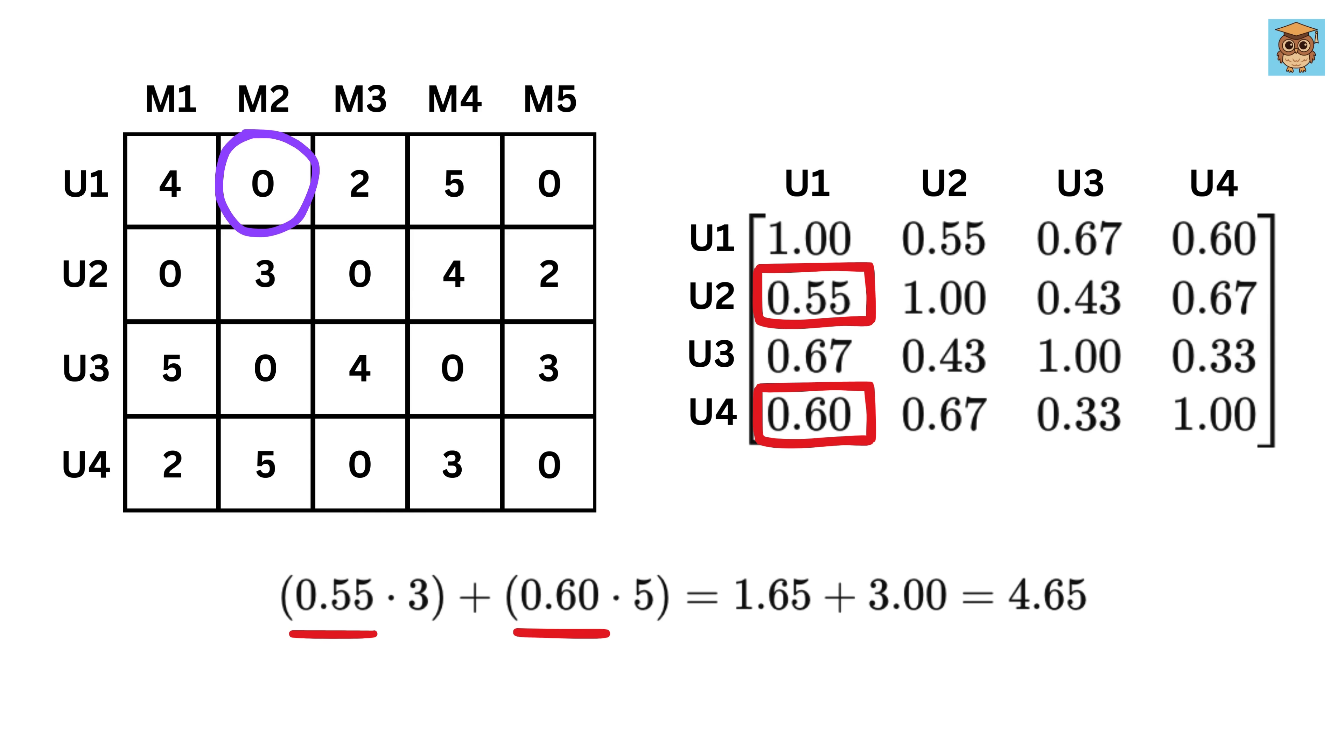Now add the similarities. 0.55 plus 0.6 equals 1.15. Then we divide 4.65 divided by 1.15, which is about 4.04. So user one might rate movie two around four stars.